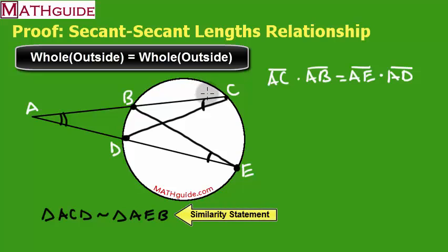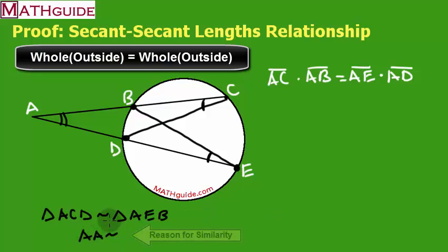Why? Because I have two pairs of angles congruent, so I'm using the angle-angle postulate, angle-angle similar postulate. So I've got angle C congruent to E. That's what it shows in my similarity statement, and I've got A is congruent to itself. So if I've got two angles that are congruent between two triangles, I know that two triangles are similar.